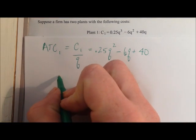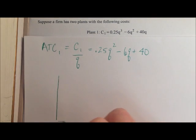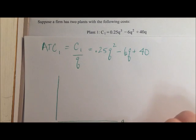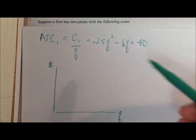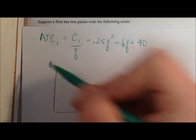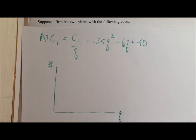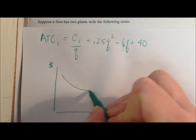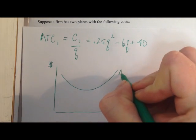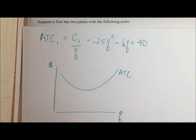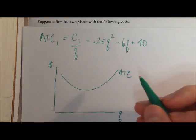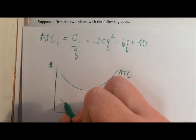And so graphically, what that relationship looks like is this. So with quantity on our horizontal axis and costs on our vertical axis, our average total costs are generally going to look something like this. It has this U shape.